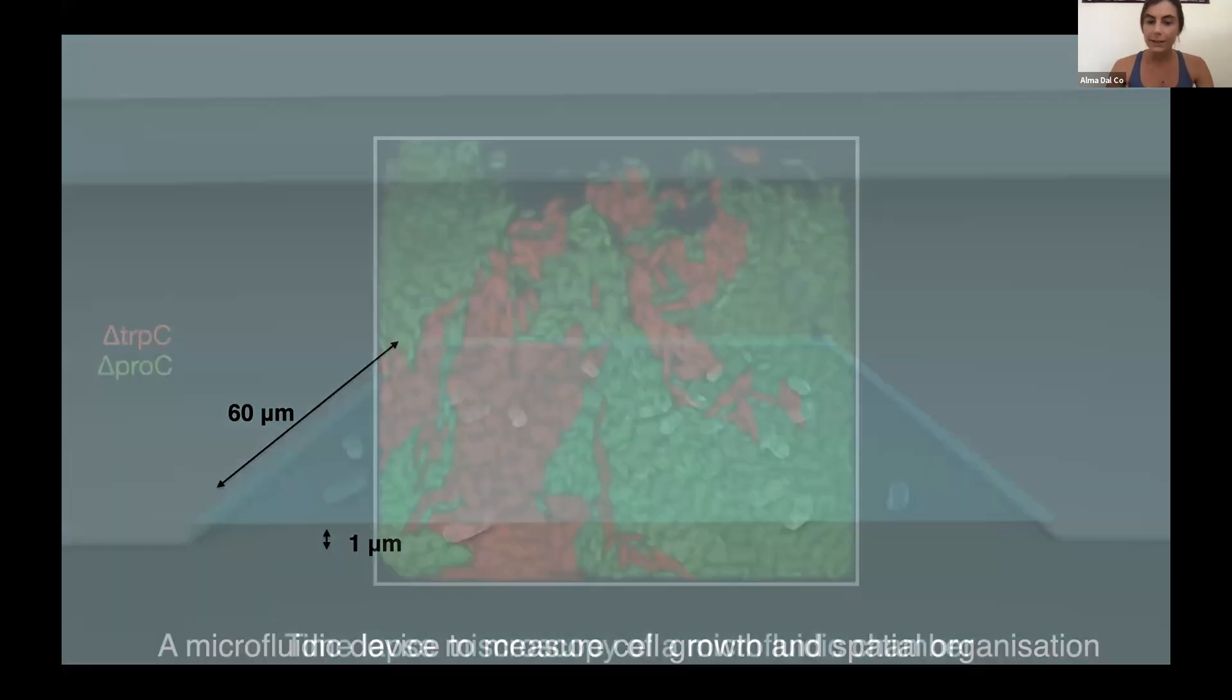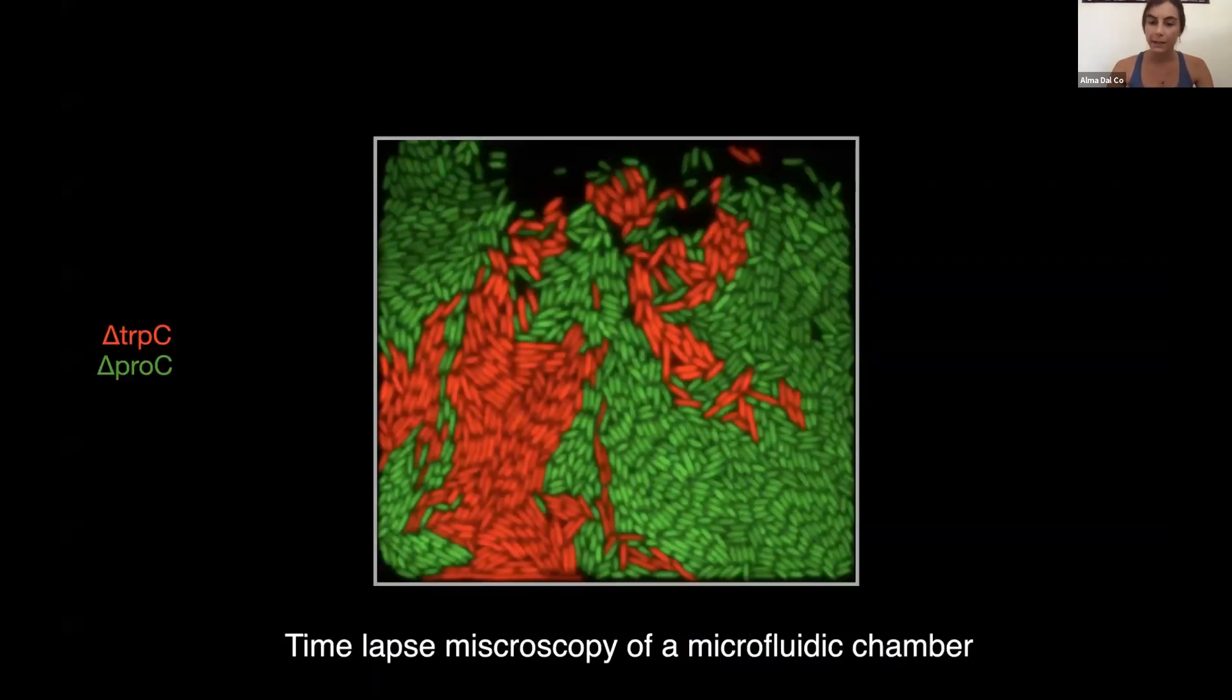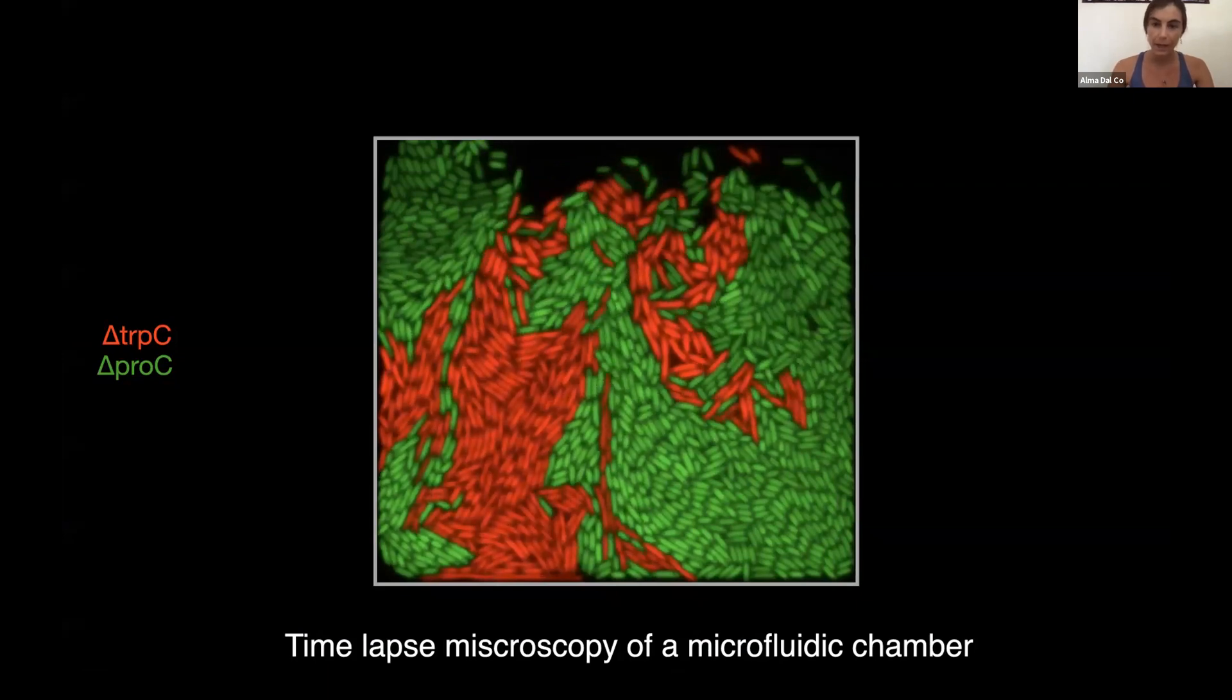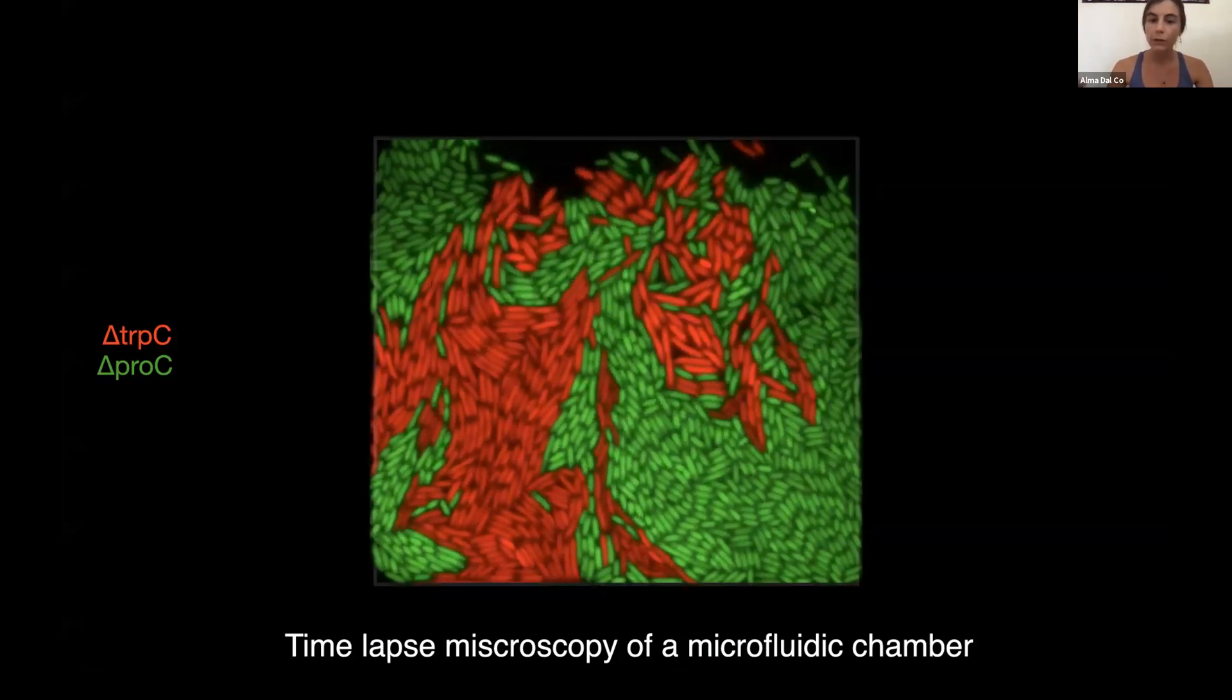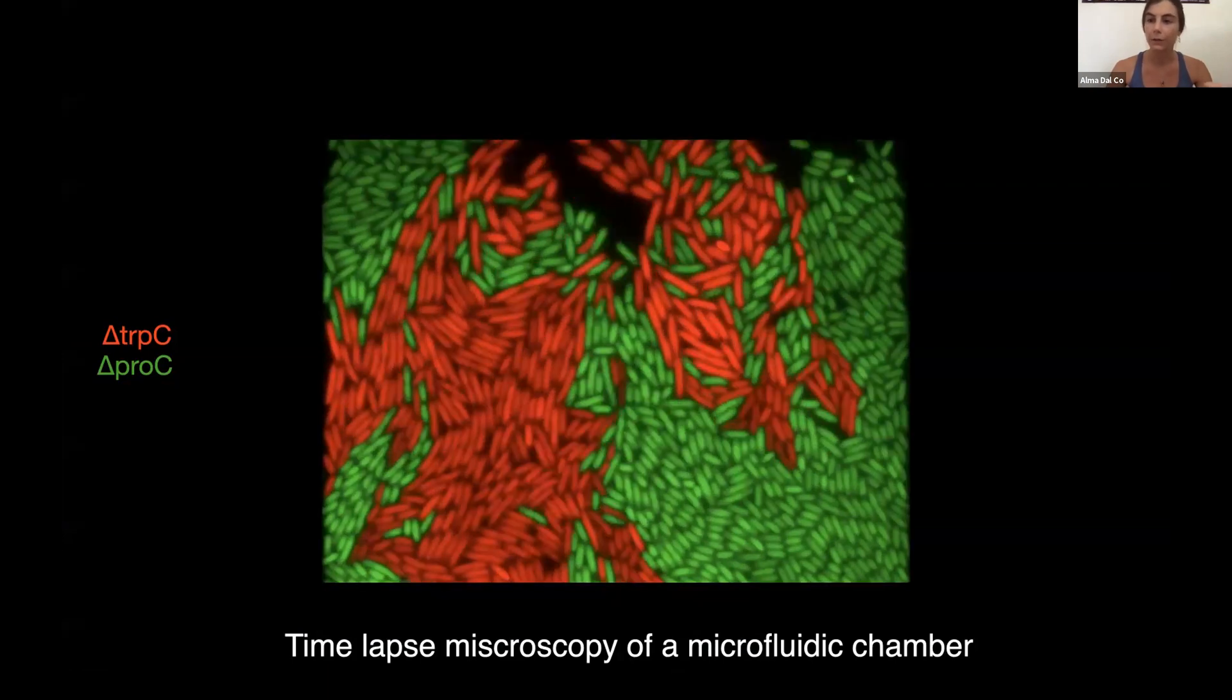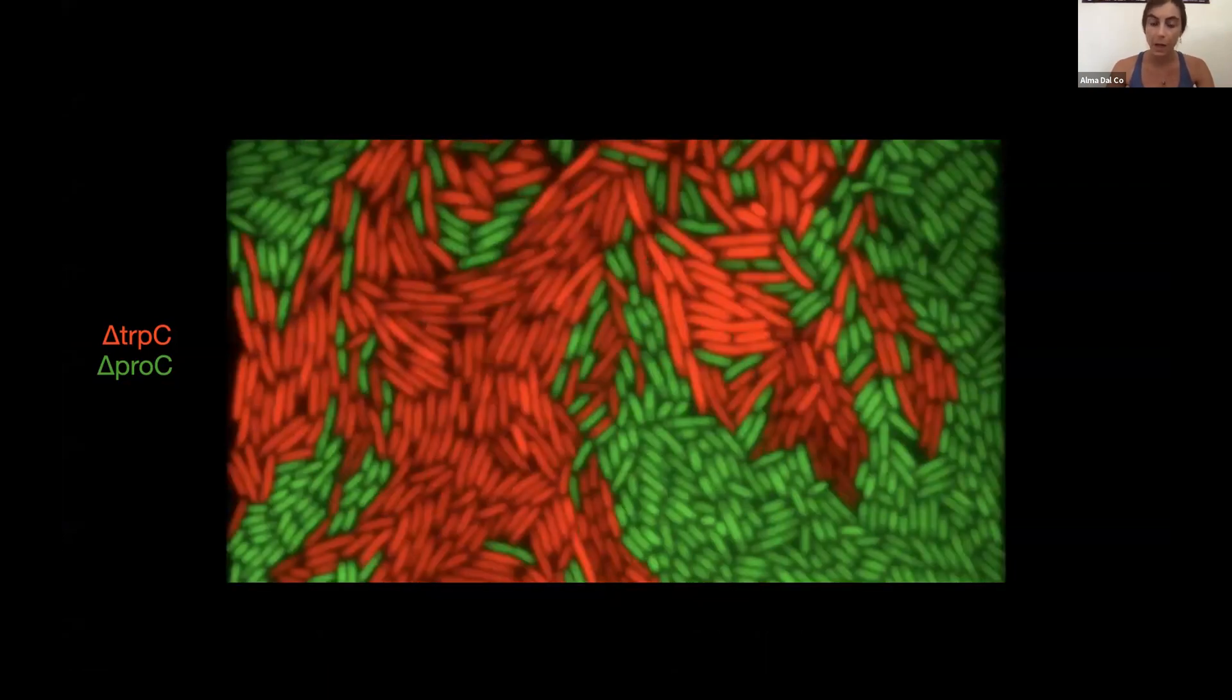So this is how typical data looks like. This is the timelapse movie of a microfluidic chamber. As you can see we have full information of the spatial arrangement of the two cell types. But not only that we have also the resolution to measure the growth of single cells one by one.